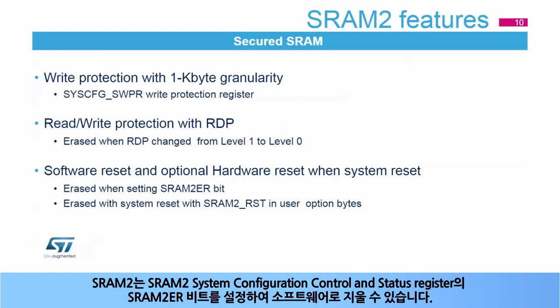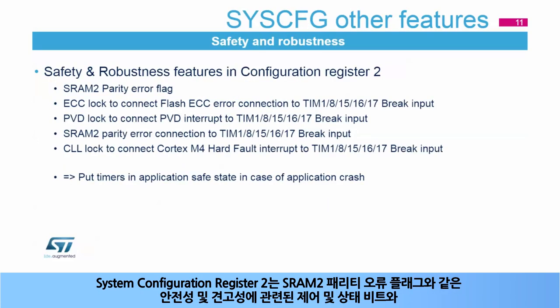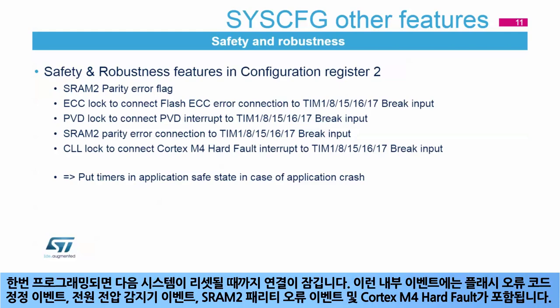SRAM2 can be erased by software by setting the SRAM2_ER bit in the SRAM2 system configuration control and status register. SRAM2 can also be erased with the system reset, depending on the option bit SRAM2_RST in the user option bytes. The system configuration register 2 contains control and status bits linked to safety and robustness, such as the SRAM2 parity error flag and control bits to direct error detection events to the timer's break inputs. This allows timer outputs to be placed in a known state during an application crash. Once programmed, the connection is locked until the next system reset.